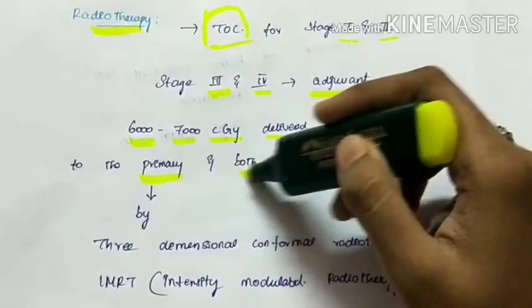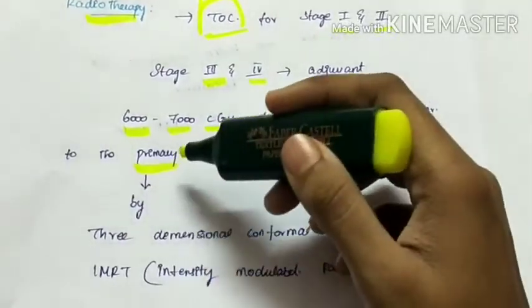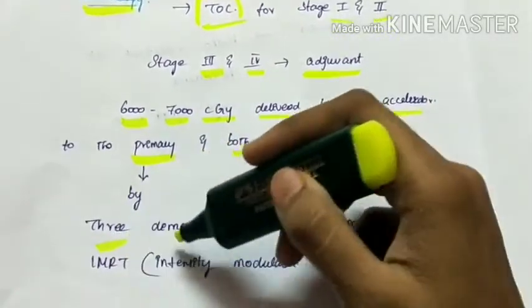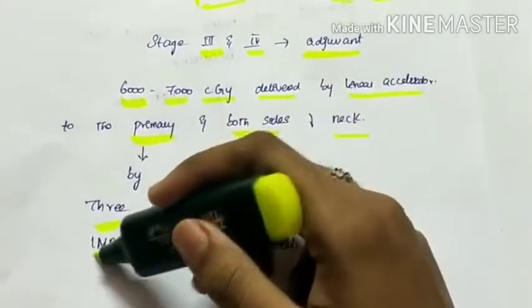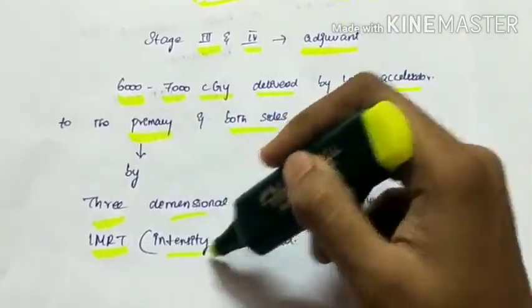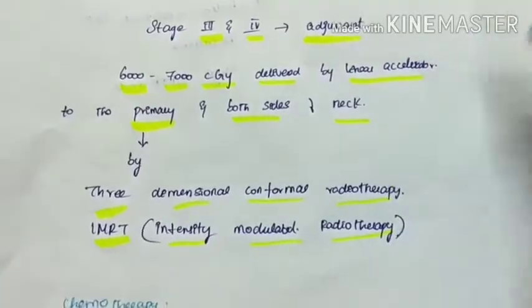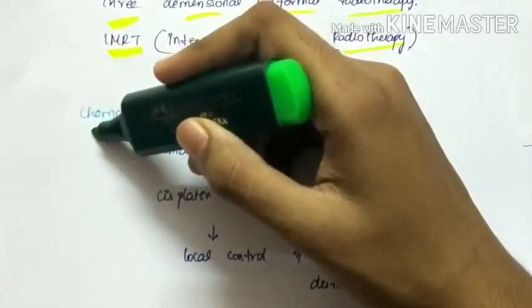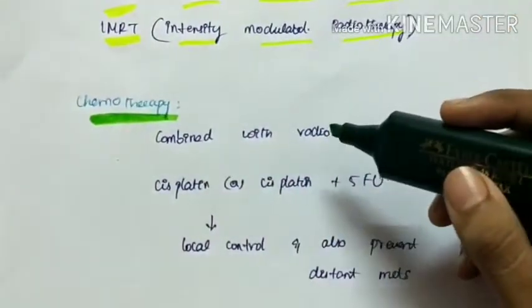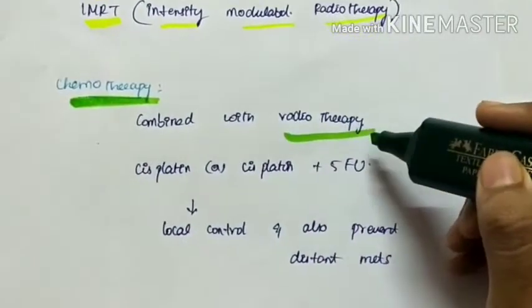This is given by three-dimensional conformal radiotherapy or IMRT (intensity modulated radiotherapy). Next is chemotherapy - this chemotherapy is usually combined with radiotherapy.